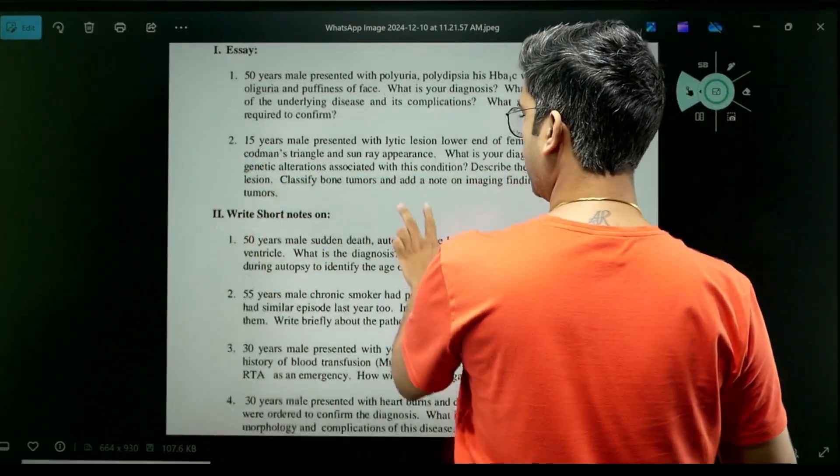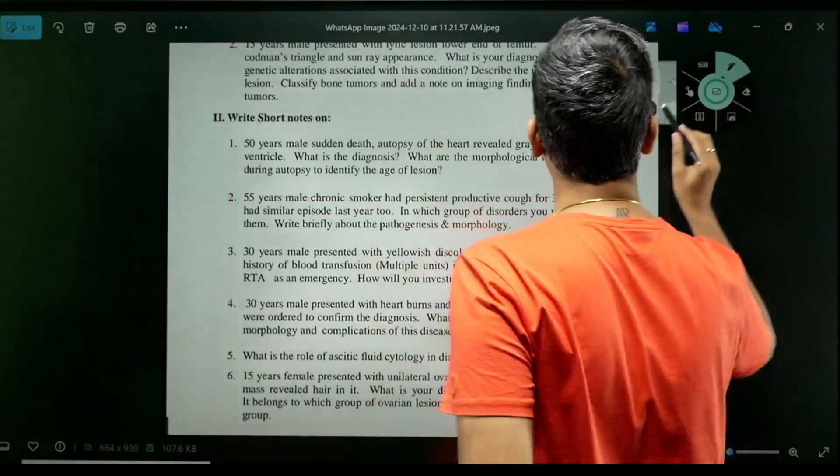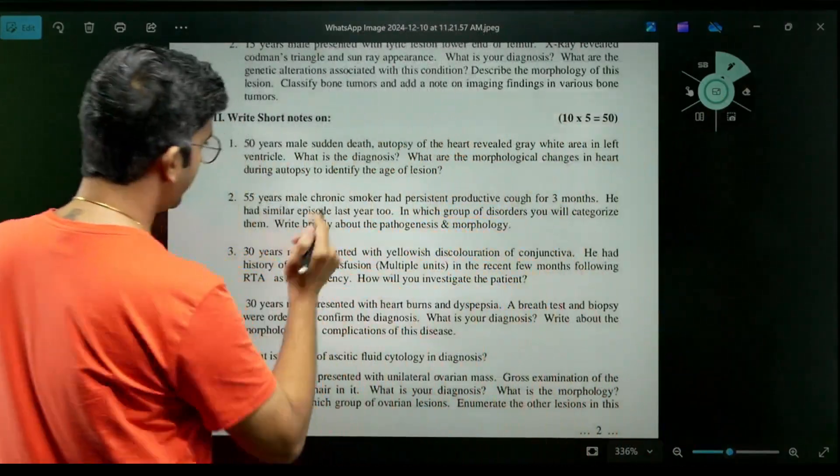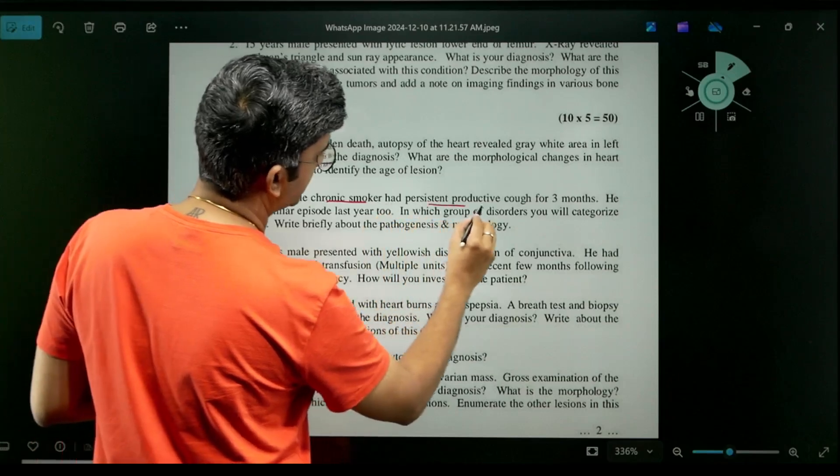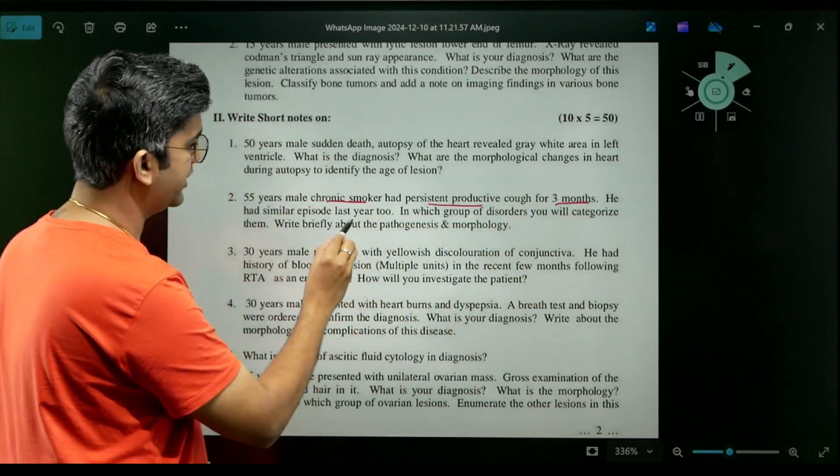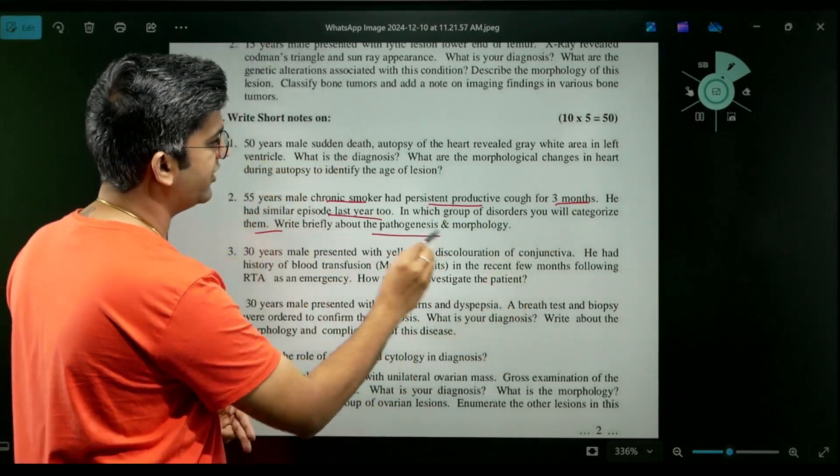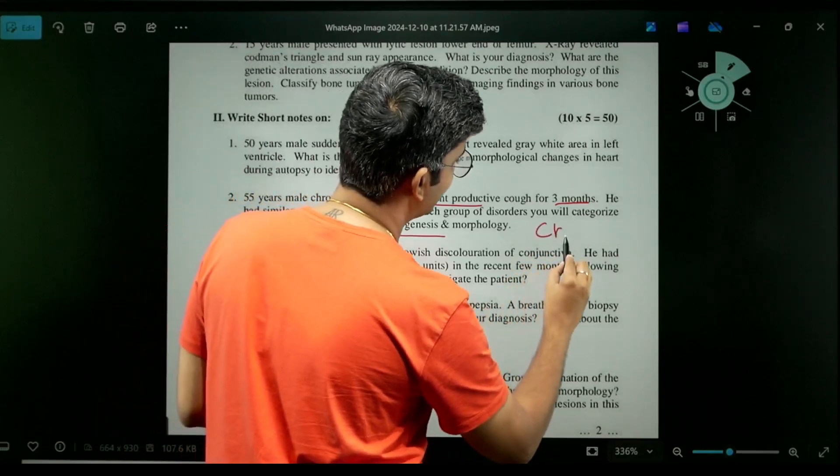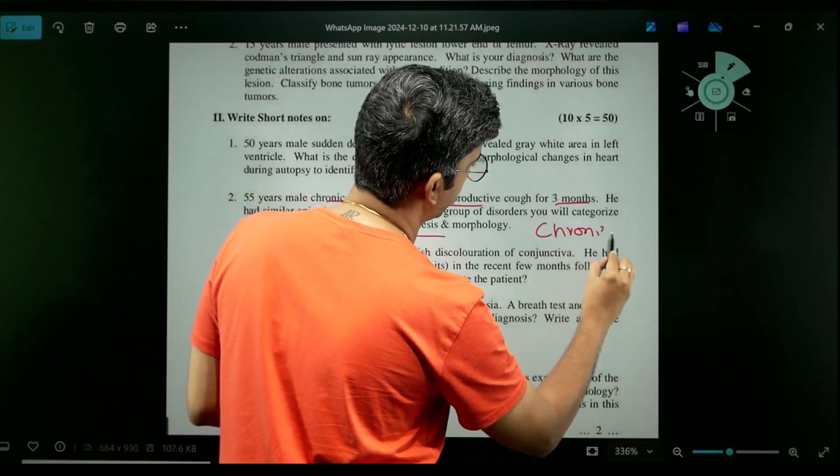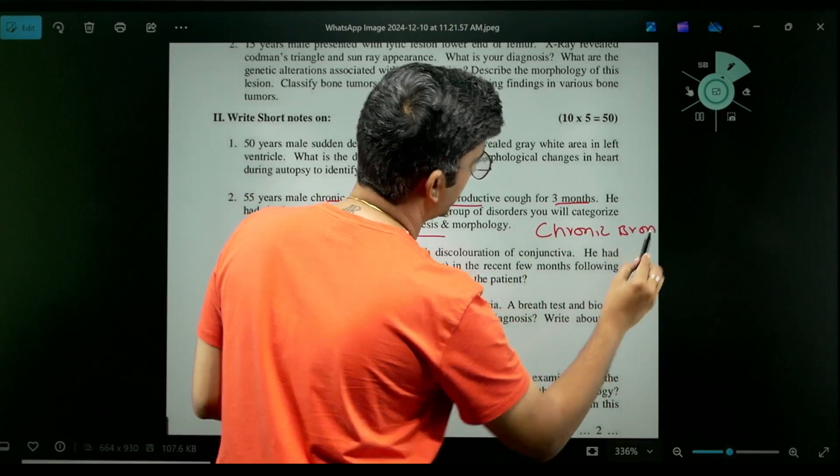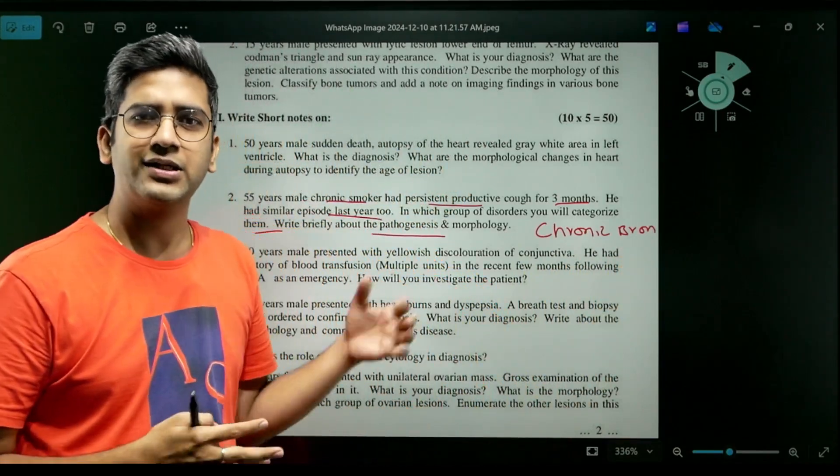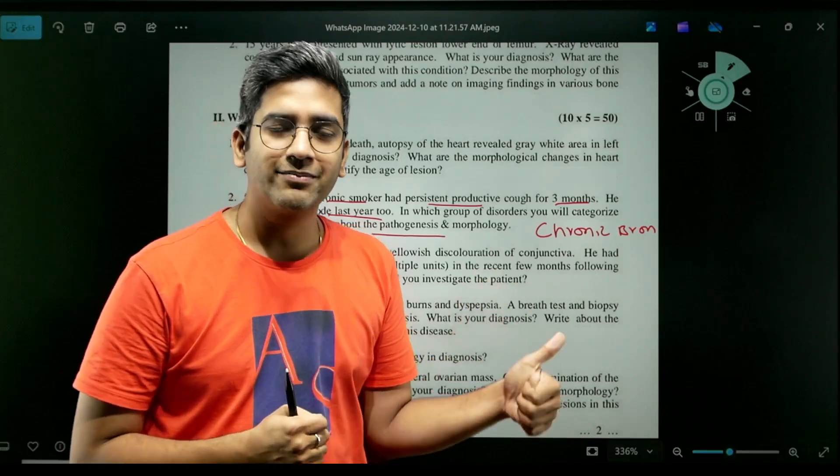Let's go to the next one. Just give me a second, let's pull this guy a little bit up. Okay, let's start. A 55-year-old chronic smoker, persistent productive cough for three months, similar episode in the last year, two consecutive years. Which disease you will categorize them and briefly write about the pathogenesis? This is a classical history of chronic bronchitis. COPD chronic bronchitis would be the appropriate classification. We put them into chronic bronchitis - a cough for three months for two years is classical history or definition of chronic bronchitis.